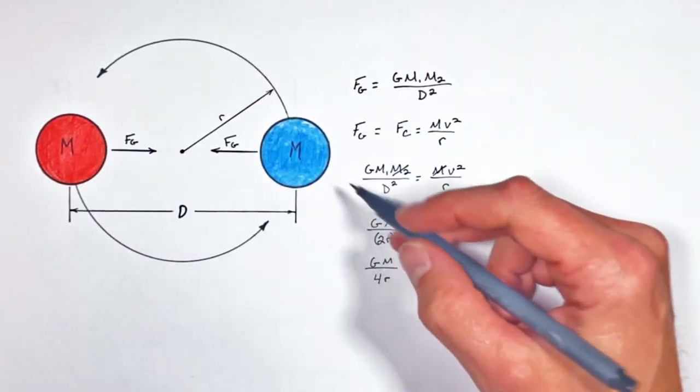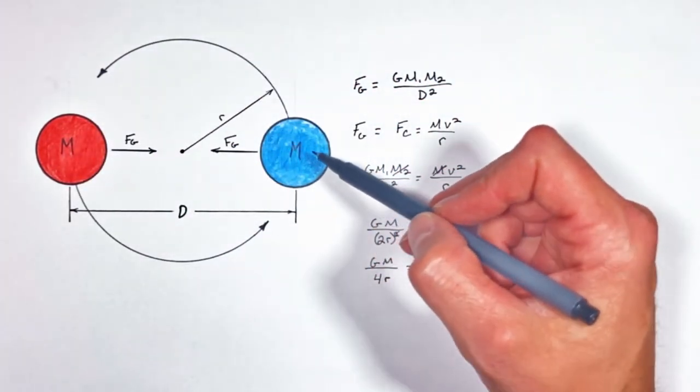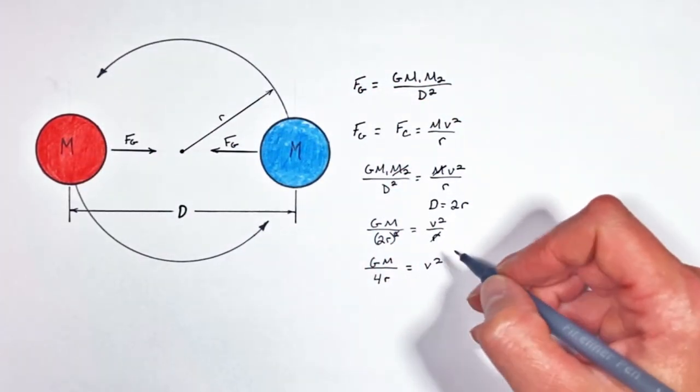But remember we're trying to solve for the period, or the time for one orbit. So we need to relate the velocity back to time.